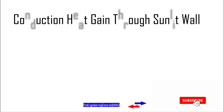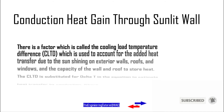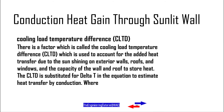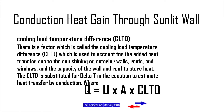Conduction heat gain through sunlit surfaces is estimated using the Cooling Load Temperature Difference, or CLTD. The CLTD is a factor used to account for the added heat transfer due to the sun shining on exterior walls, roofs, and windows, and the capacity of the wall and roof to store heat. The CLTD is substituted for delta T in the conduction heat transfer equation: Q equals U times A times the Cooling Load Temperature Difference, CLTD.